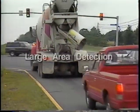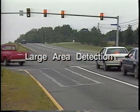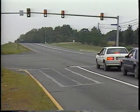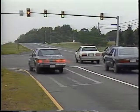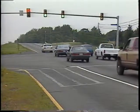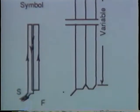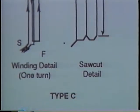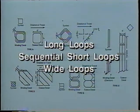Large area detection normally consists of a detection zone that covers an area of twenty feet or more in a traffic lane — primarily presence detection, registering the presence of a vehicle as long as that vehicle occupies the detector zone. Originally, large area detection utilized a single long loop encompassing the entire zone. Today, you can choose long loops, sequential short loops, or wide loops in a large area detection design.